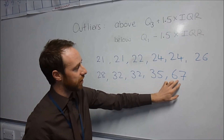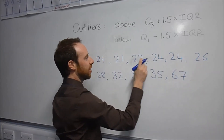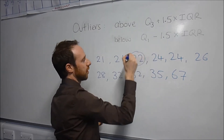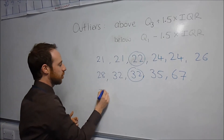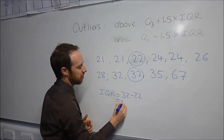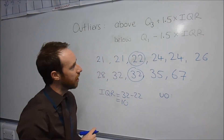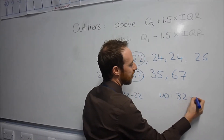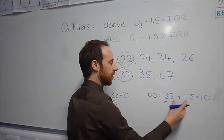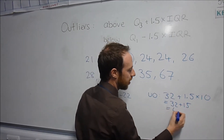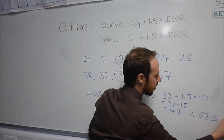Let's look at this data to see if the figure we suspect is an outlier actually is. We can tell that's the median, Q1 is 22, and Q3 is 32. The interquartile range is 32 minus 22, which is 10. For upper outliers, we take Q3 which is 32, add on 1.5 times the IQR of 10 — that's 15 — so 32 plus 15 is 47. Anything above 47 must be an outlier. Therefore, 67 is an outlier.